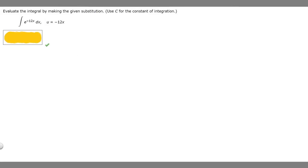In this problem we're told to evaluate the integral by making the given substitution. Use c for the constant of integration. We're told that the integral e to the minus 12x dx and u is going to be equal to minus 12x.